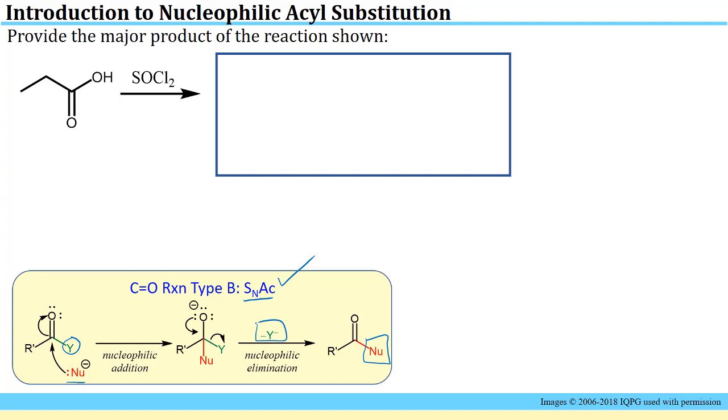In this particular reaction, we see a carboxylic acid, and our nucleophile source must be the only reagent we have, the thionyl chloride. Just like in reactions we've seen of thionyl chloride reacting with alcohols, the chlorine is going to be the nucleophilic piece, so it's going to end up replacing some leaving group on the carbonyl species.